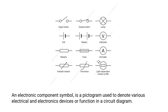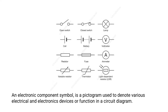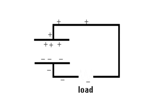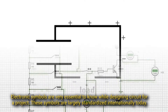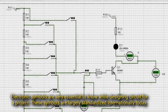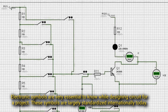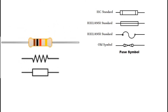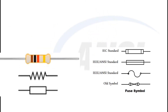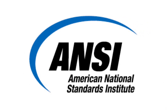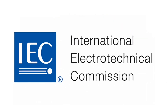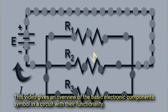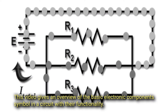An electronic component symbol is a pictogram used to denote the various electrical and electronic devices or functions in a circuit diagram. Electronic symbols are very essential to know while designing a circuit for a project. These symbols are largely standardized internationally today, although they change based on countries, due to common principles fixed by the American National Standard Institute (ANSI) and International Electrotechnical Commission. This video gives an overview of the basic electronic component symbols in a circuit with their functionality.